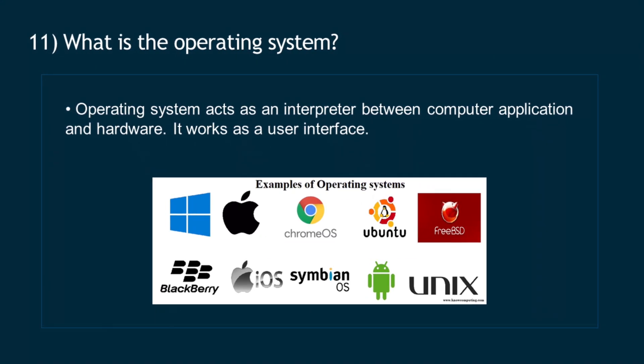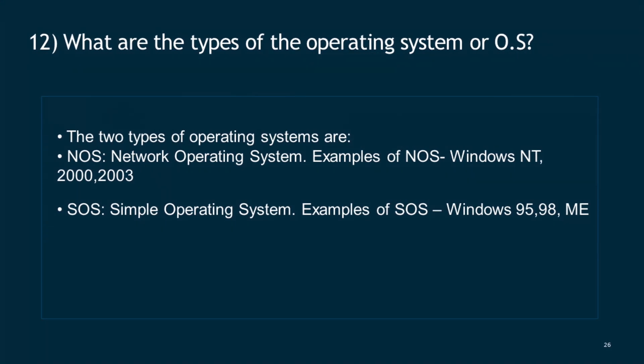Question 11: What is an operating system? An operating system acts as an interpreter between computer applications and hardware, and works as a user interface. Question 12: What are the types of operating systems? The two types of operating systems are NOS (network operating system) — examples include Windows NT, 2000, and 2003.